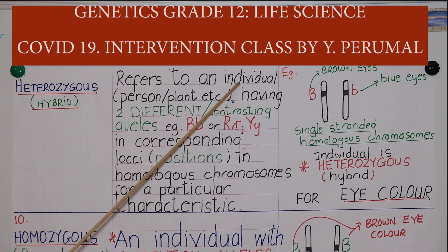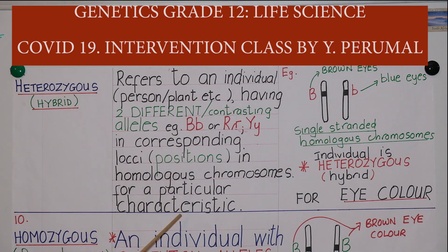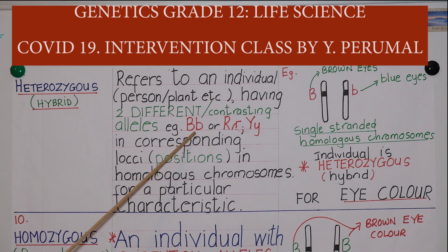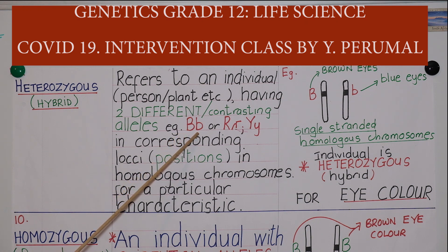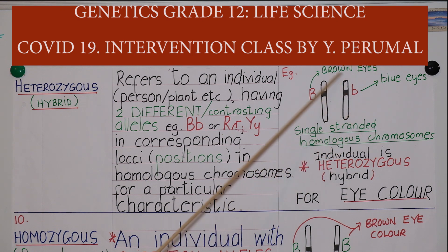Heterozygous refers to an individual — for example, a person, plant, or animal — which has two different or two contrasting alleles for a particular characteristic. The genotype of that individual would be two different letters. For example, a capital letter B coding for brown eye colour and a small letter b coding for blue eye colour. Or a capital letter R coding for red flowers in plants and small r coding for white flowers.